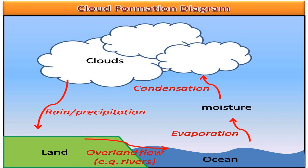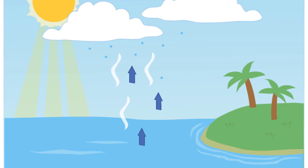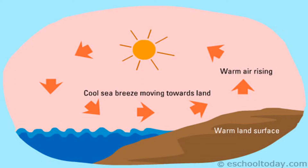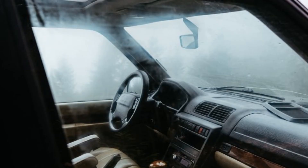Condensation occurs when certain conditions are met. Condition 1: Rising air — water vapor suspended in rising air causes condensation. The sun's rays pass through the atmosphere and cause ground temperature to rise. Air above the ground warms as heat radiates from the Earth and starts to rise.